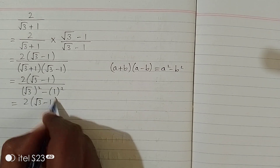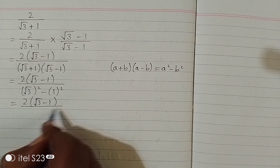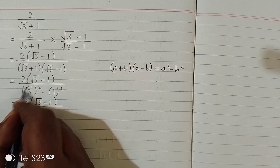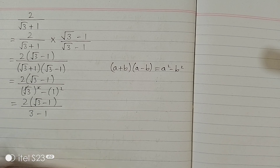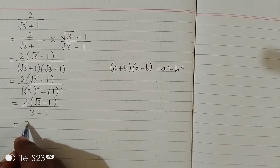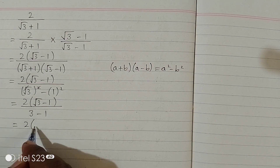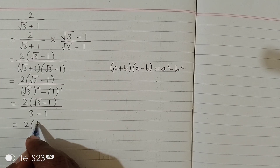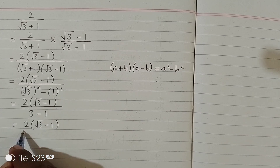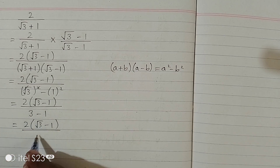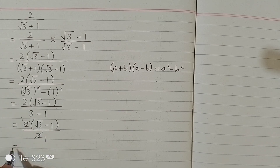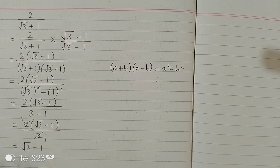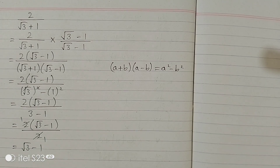Now we have 2 times (square root of 3 minus 1) upon — the square root and the square cancel — so we have 3 minus 1 in the denominator. That gives 2 times (square root of 3 minus 1) upon 2, and now we can cancel the 2s, leaving us with square root of 3 minus 1, which is the required answer.